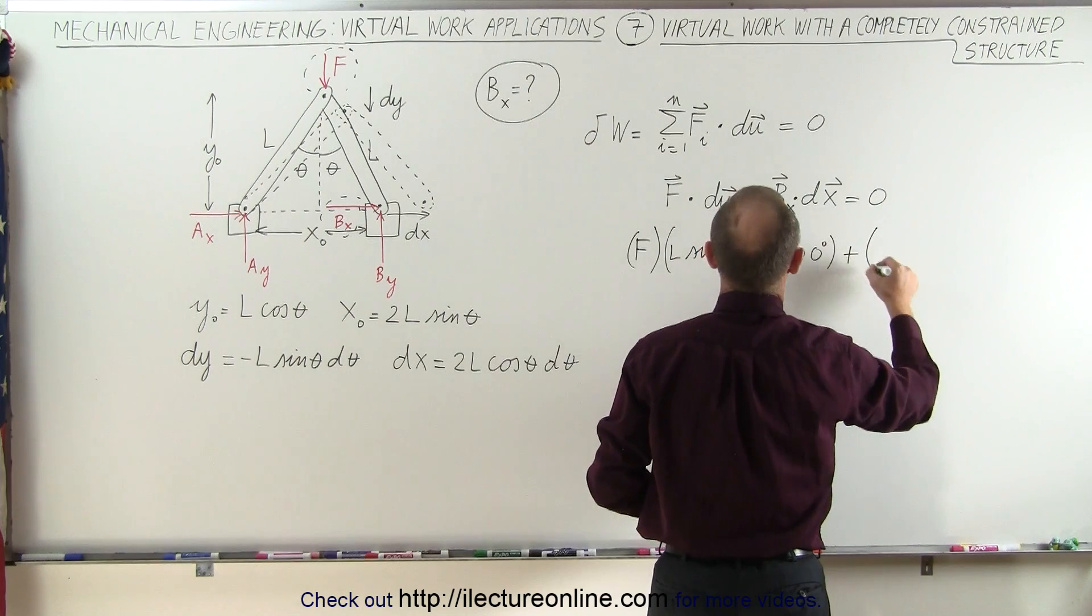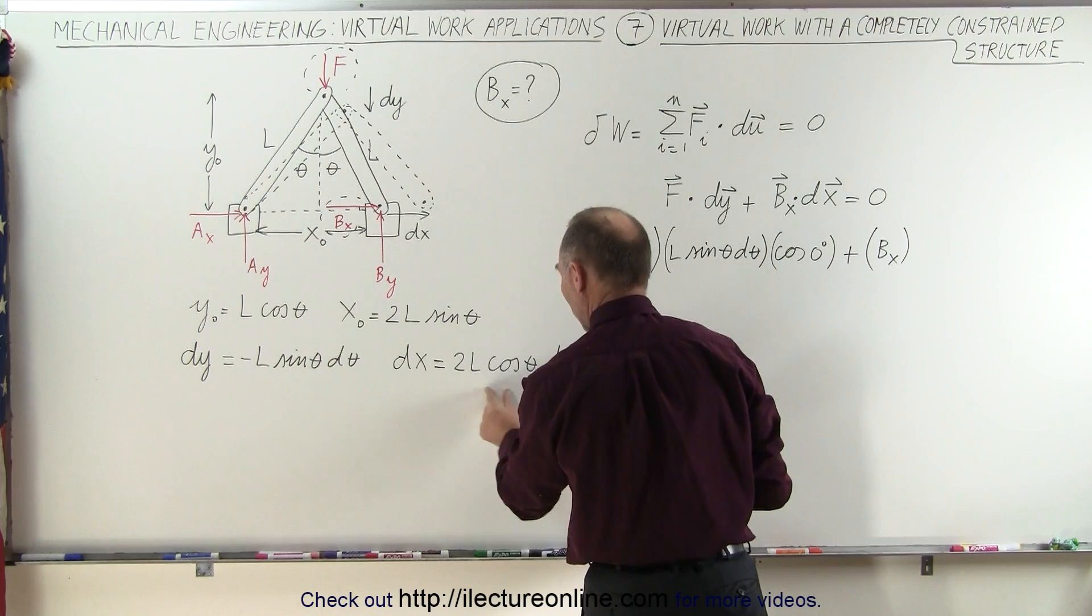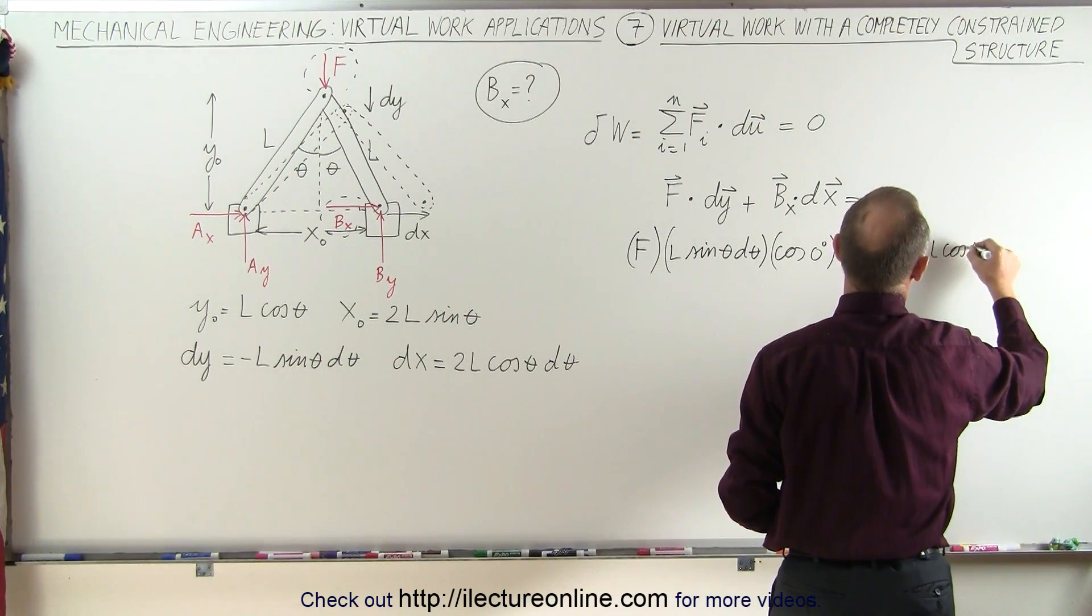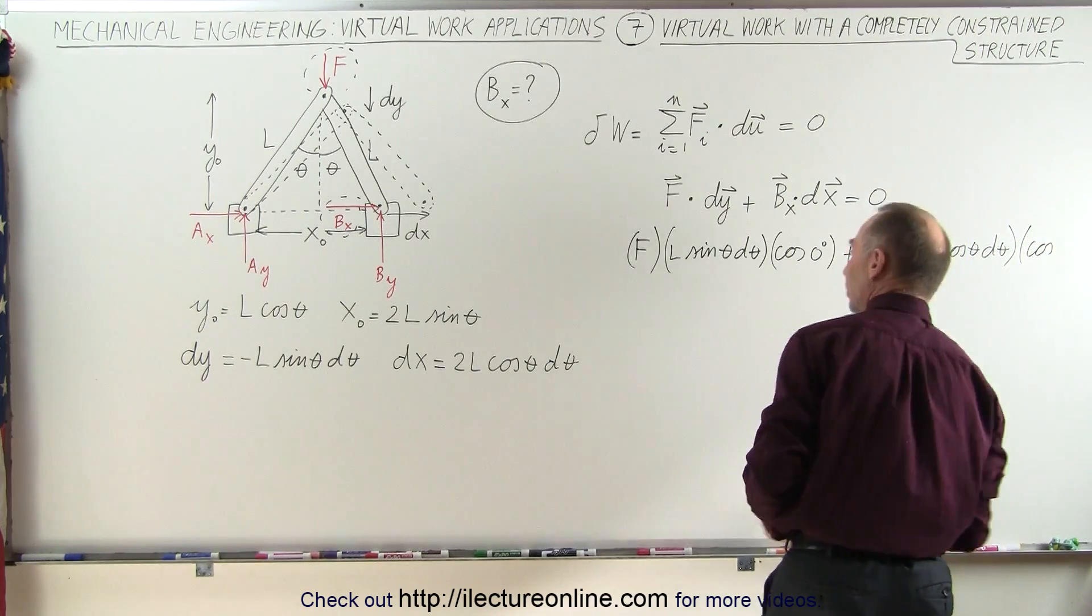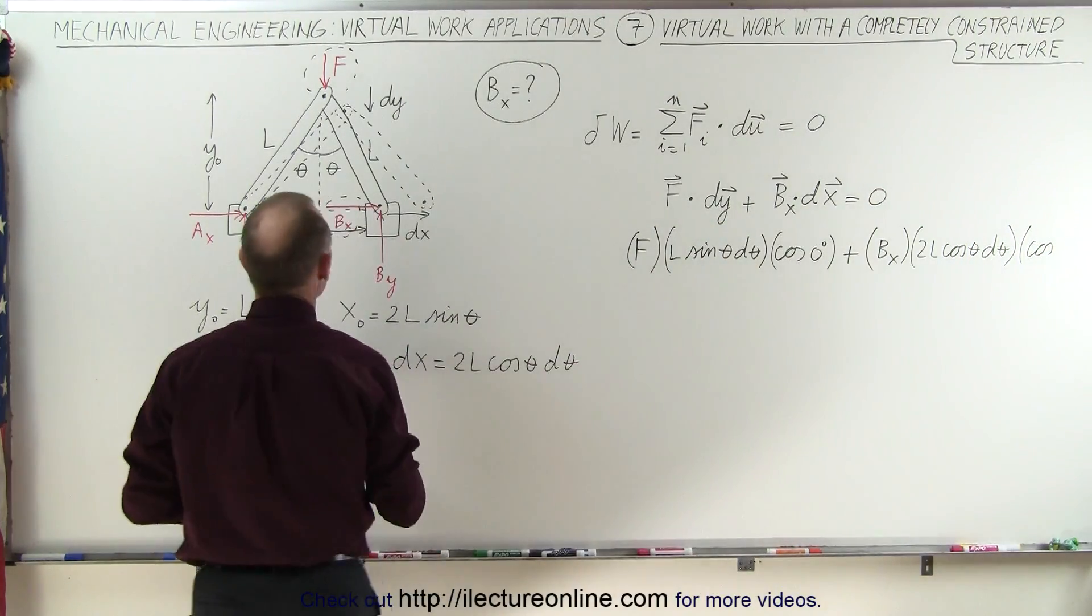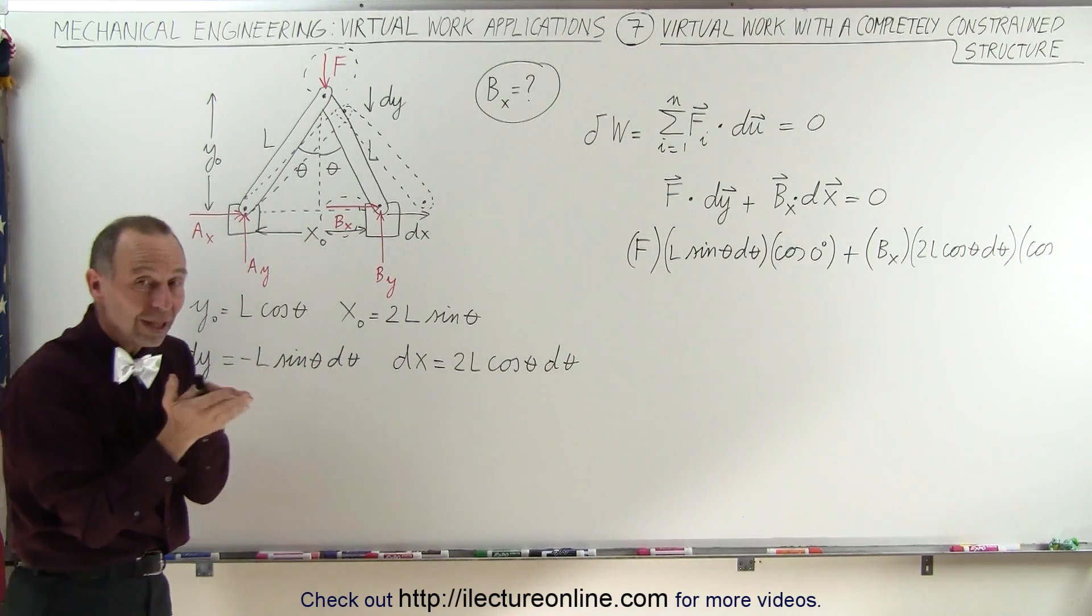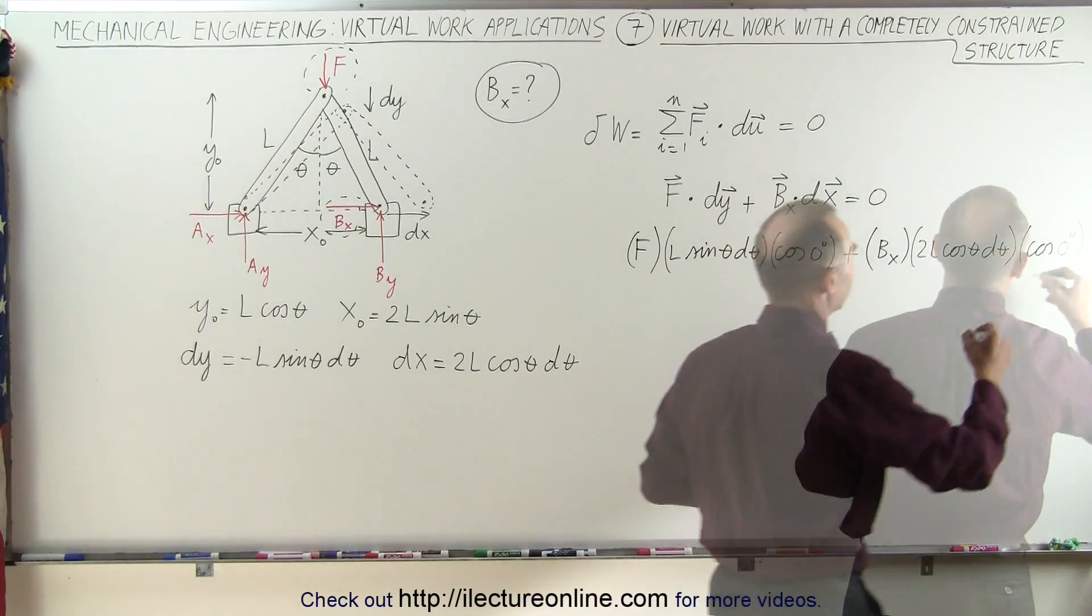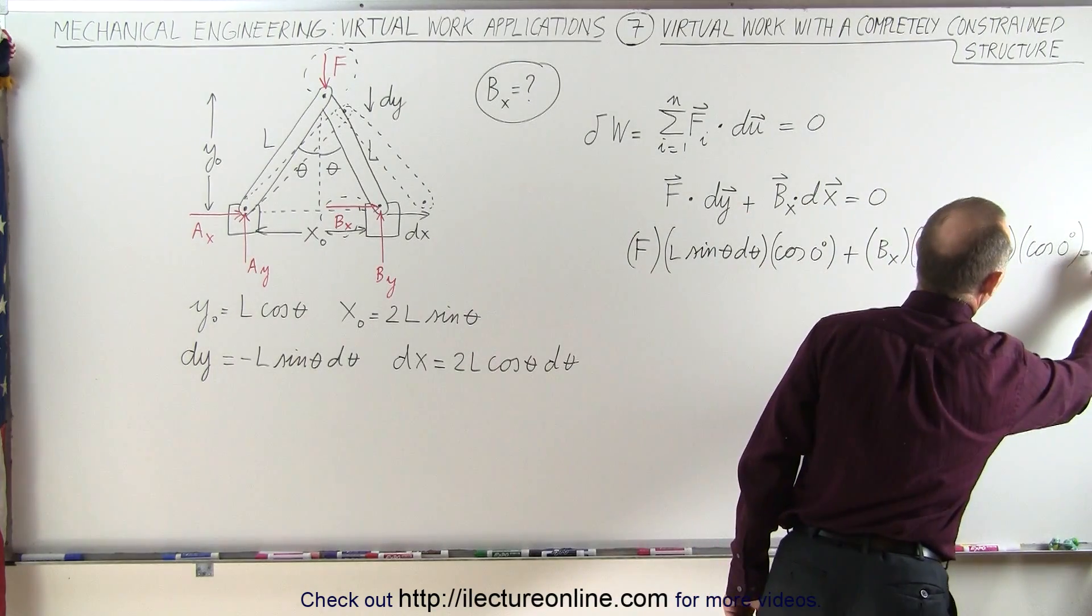Plus B sub X times dx, now dx will be 2L cosine of theta d theta, times the cosine of the angle between them. Notice that B sub X is pointing to the right and dx is pointing to the right, so they're both pointing in the same direction, the cosine of zero degrees. And of course that equals zero.